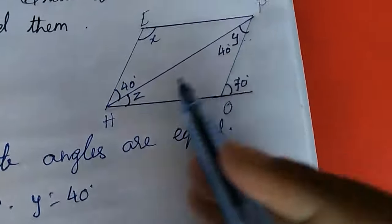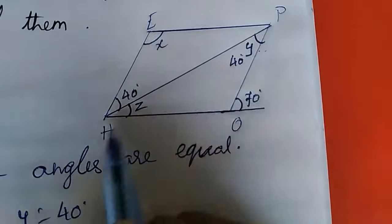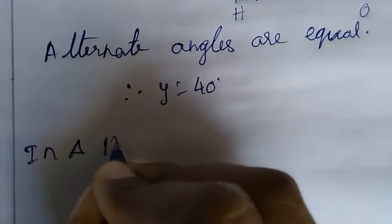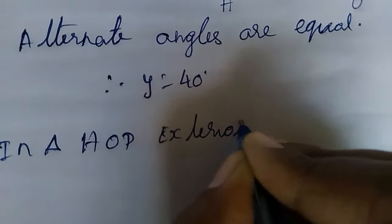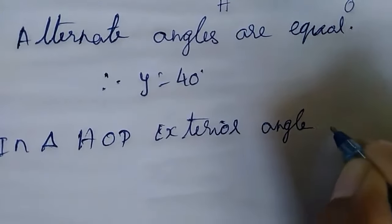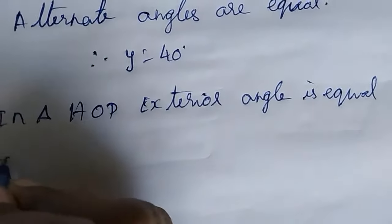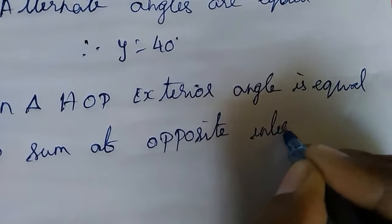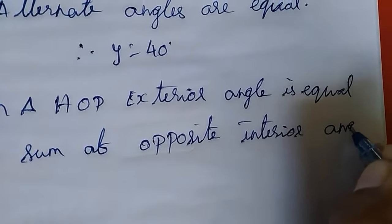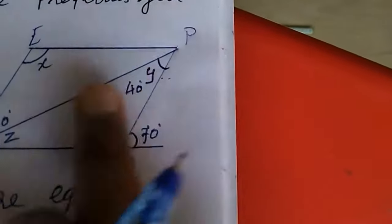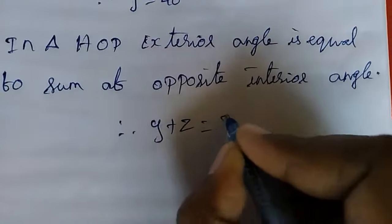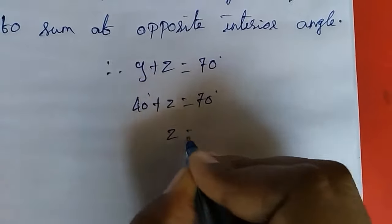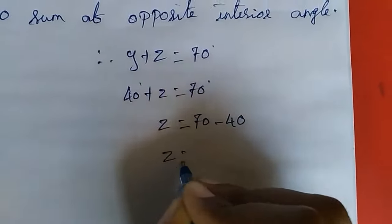HOP is a triangle. In triangle HOP, the exterior angle is equal to the sum of the opposite interior angles. Therefore y plus z equals 70 degrees. We know y equals 40 degrees, so 40 plus z equals 70 degrees. Therefore z equals 70 minus 40, which gives z equals 30 degrees.